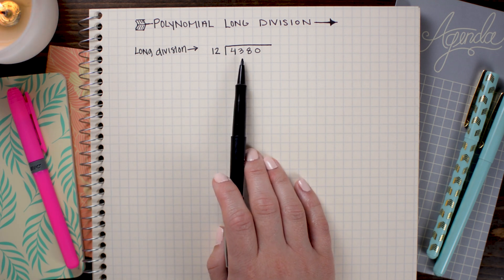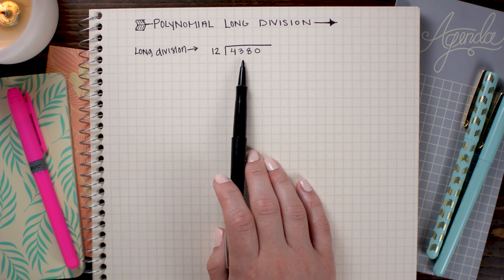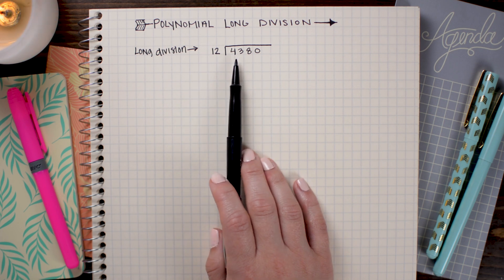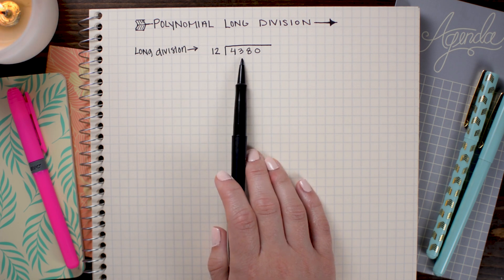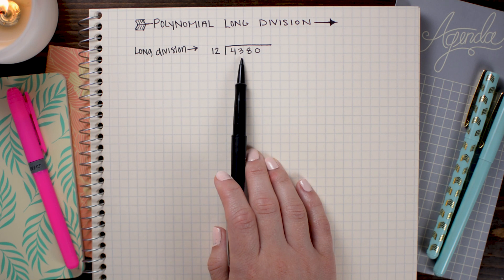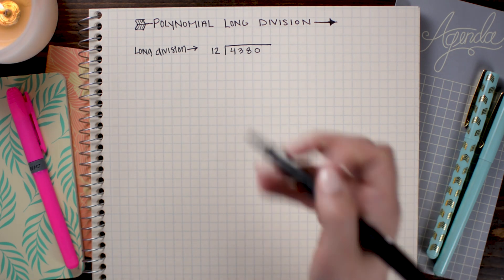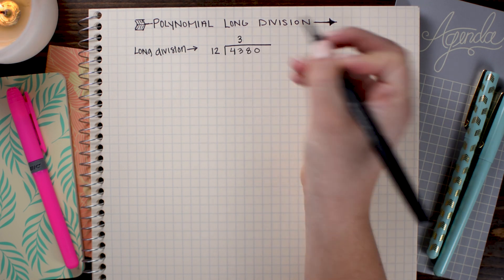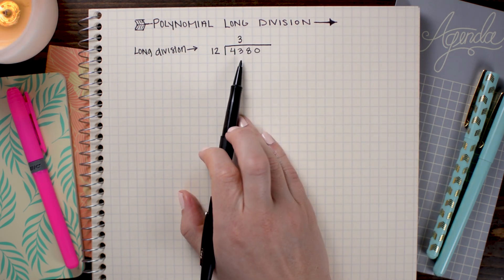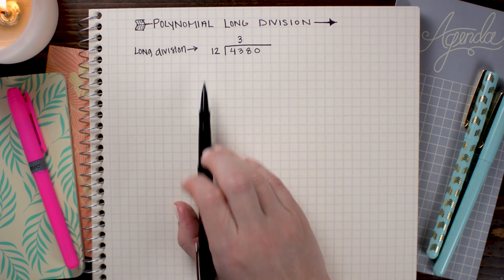So I'm going to just go ahead and move to the second number. Now that means I'm going to look for how many times 12 goes into 43. And it goes into 43 three times, because 3 times 12 is 36. So I'm going to go ahead and write a 3 above the second digit, and subtract out the product, which is 36.